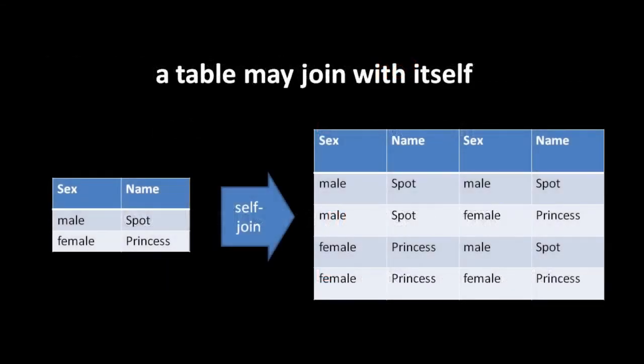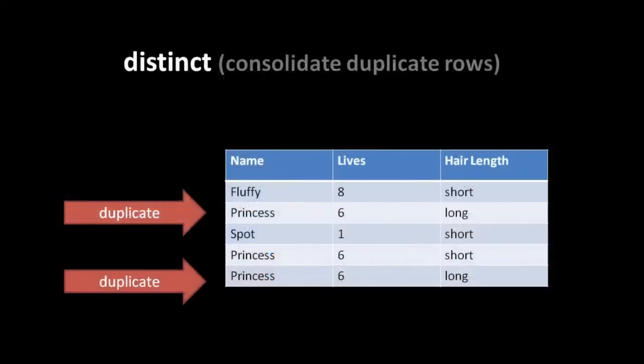It's actually possible to join a table with itself. For example, taking a 2x2 dogs table and joining it with itself in a cross join gives back a table with 4 columns and 4 rows - because 2 plus 2 gives 4 columns and 2 times 2 gives 4 rows. Beyond joining, there are a few more interesting things we can do in queries, such as filtering for distinct rows - in other words, getting rid of duplicates.